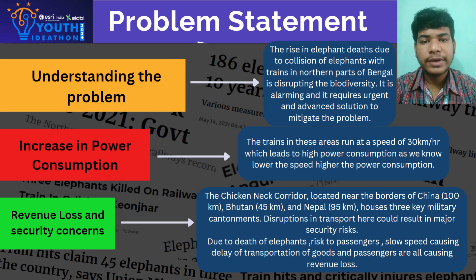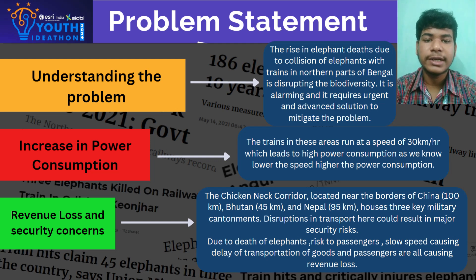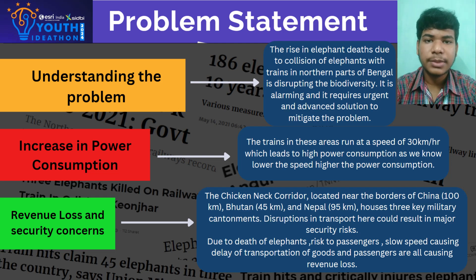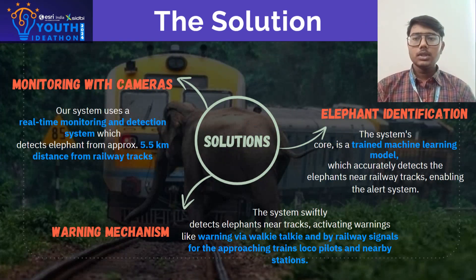Train schedules were disrupted, goods and people were delayed, and the vital military cantonments in the region faced high risk. The remaining points are mentioned in the slide. Now here comes the solution.